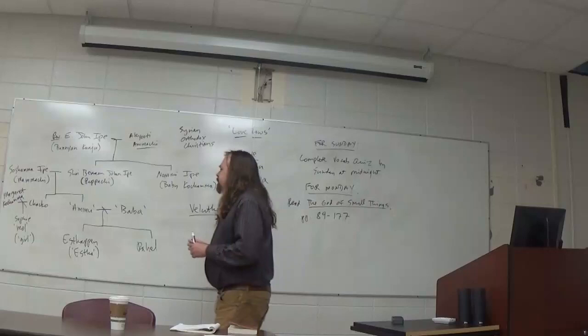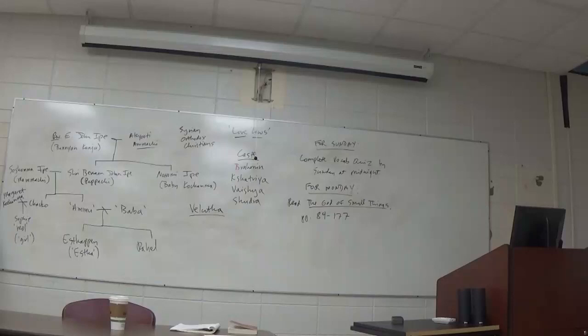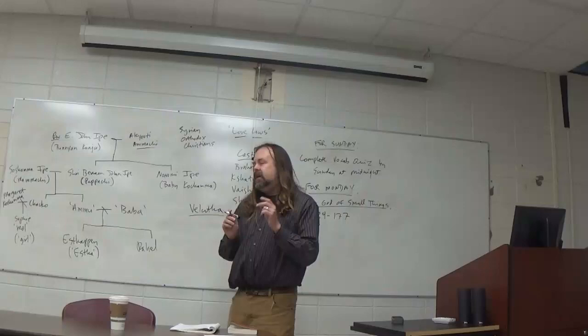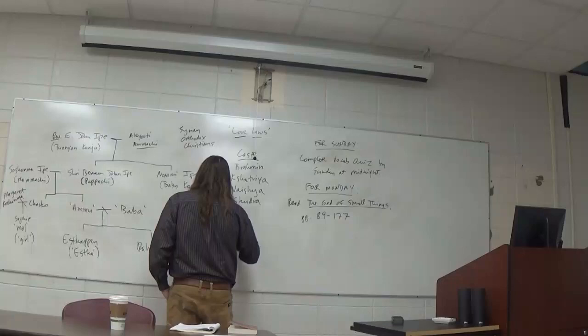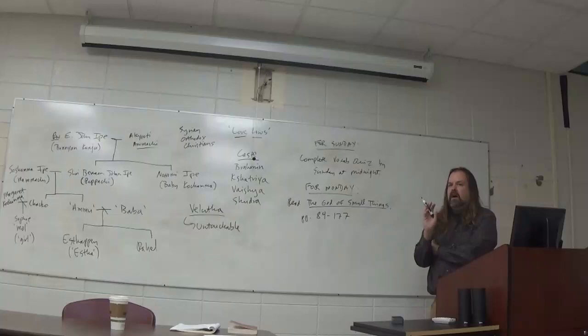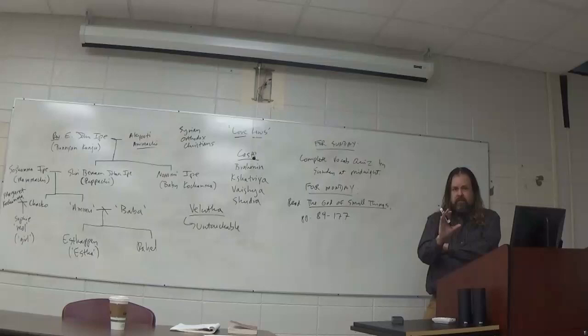But yeah, so the big thing to remember right now here, though, is this idea of love laws and how social class and the social group you belong to determines who you are allowed to mix with. By the way, like this is technically made illegal in the Indian Constitution of the late 1940s. You're not supposed to obey these distinctions anymore, but that doesn't mean they simply disappear. Now, Velutha is referred to in a text by a word that people typically don't use anymore to describe his caste, or his class, not his caste. He is what is called an untouchable. And untouchables are people who are outside of the caste system. They are people who have no caste.